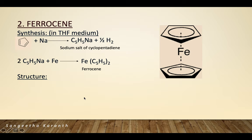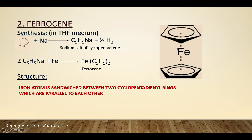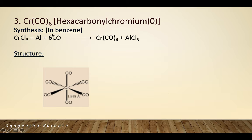Second: Ferrocene. Iron is sandwiched between two cyclopentadienyl rings coordinated in η5 fashion. Synthesis involves reacting cyclopentadiene with sodium to form the sodium salt of cyclopentadiene (replacing one hydrogen with sodium), then reacting this sodium cyclopentadienide with iron chloride in THF (tetrahydrofuran) medium to give ferrocene.